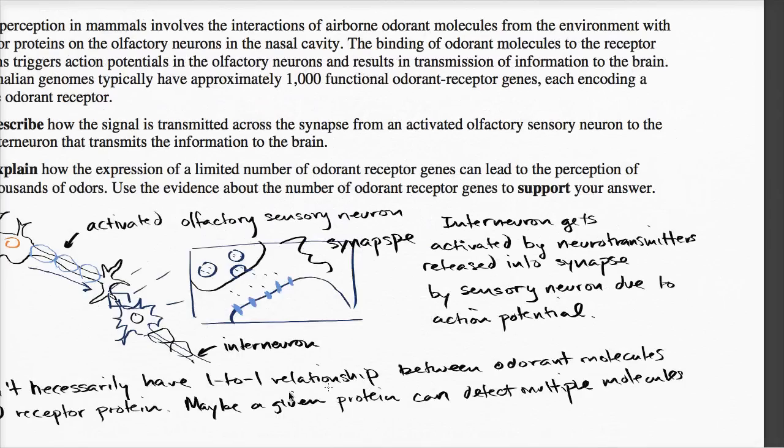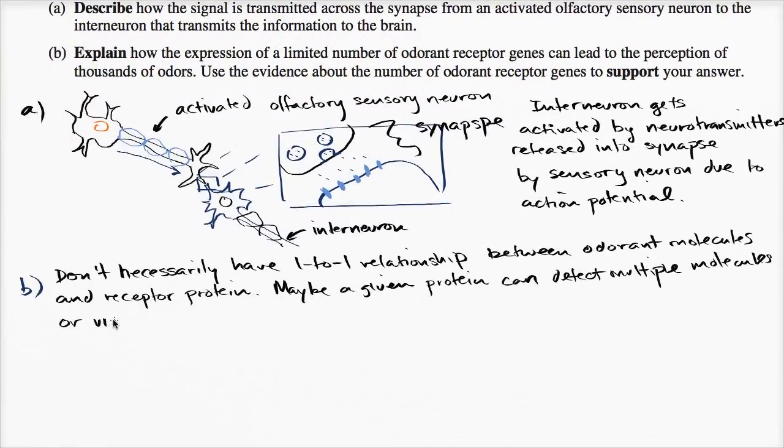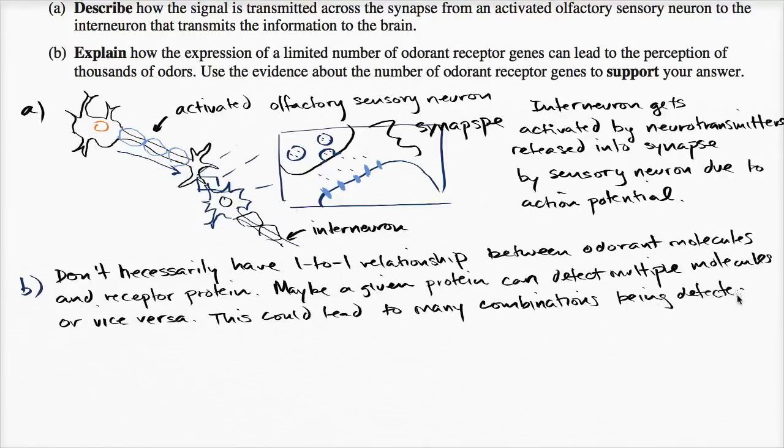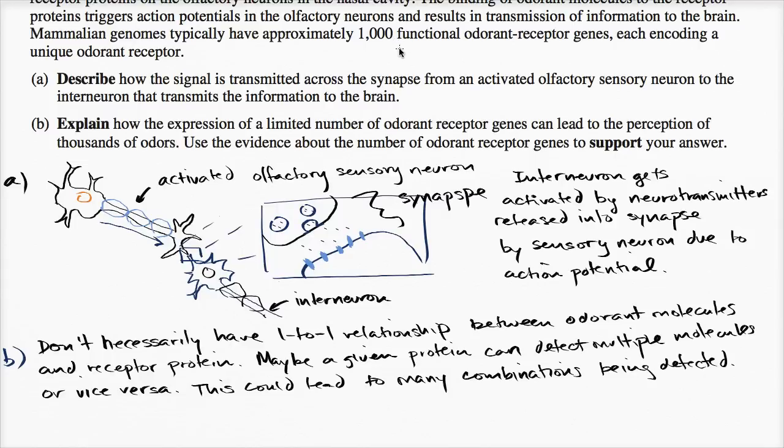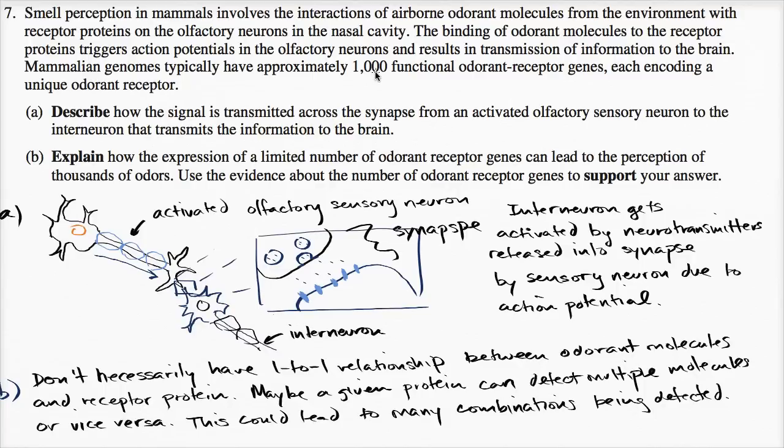Maybe a given protein can detect multiple molecules, or vice versa. And so then you could have, this could lead to many combinations, combinations being detected.